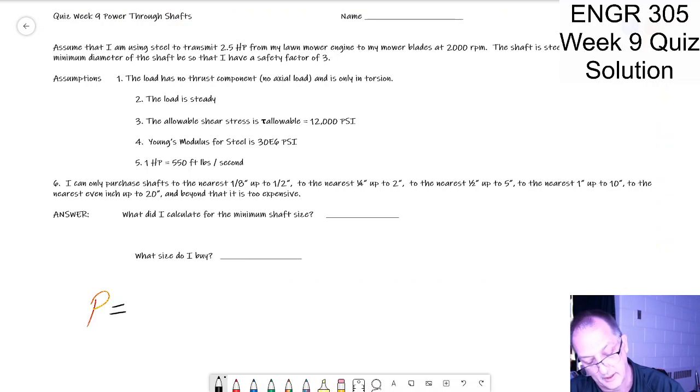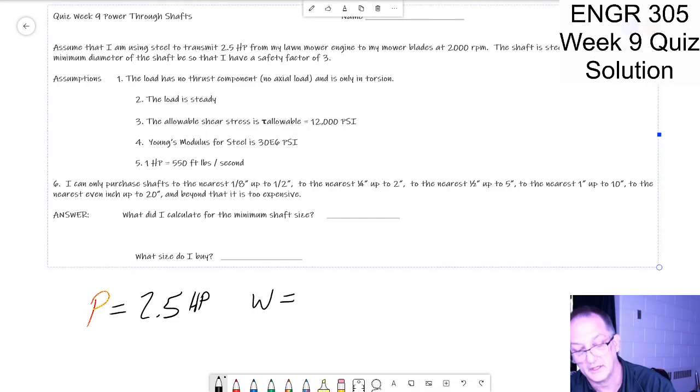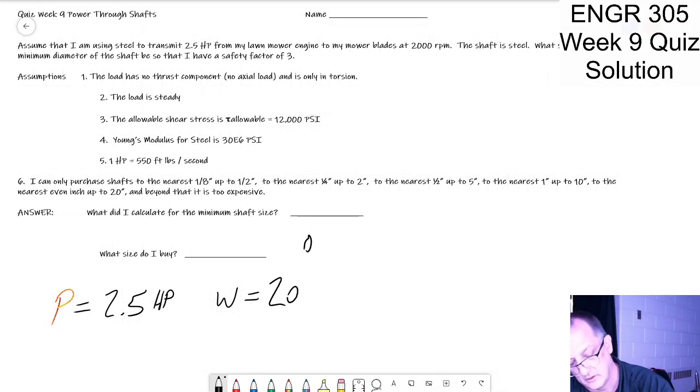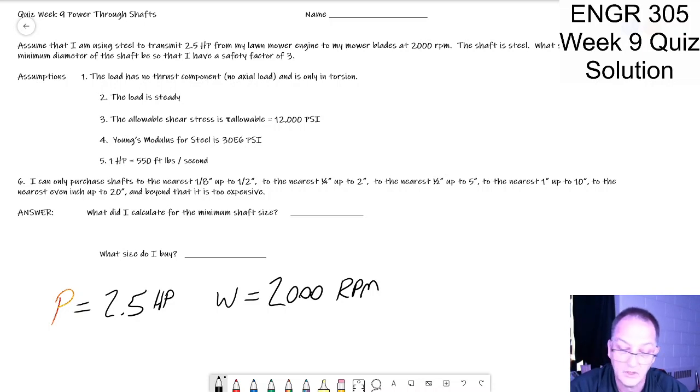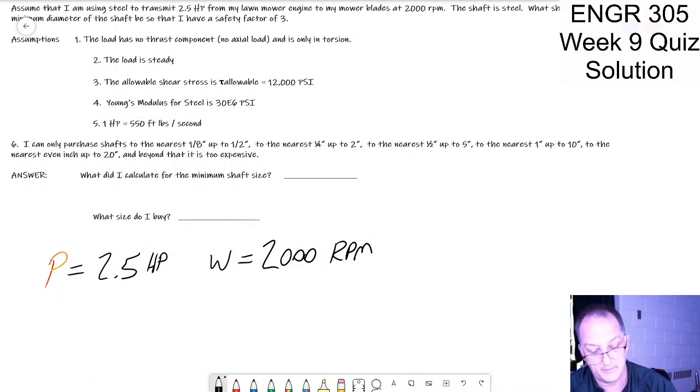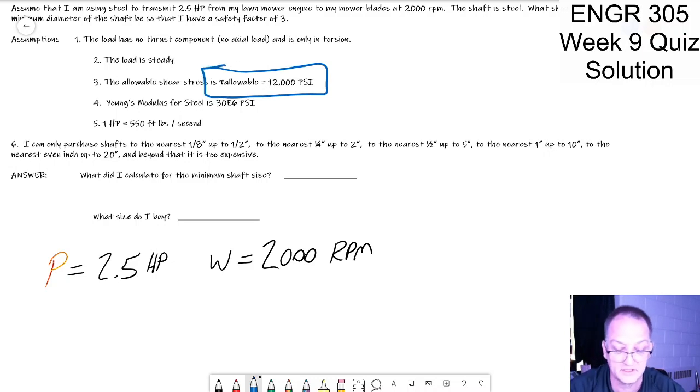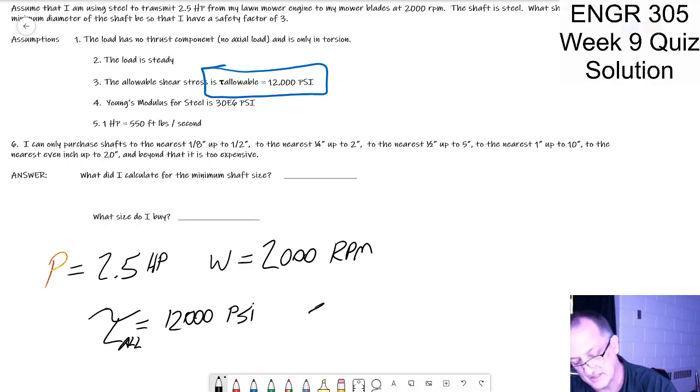Power is equal to 2.5 horsepower and I've got my speed is equal to 2,000 rpm. Now the shaft is steel, what should the minimum diameter of the shaft be so that I have a factor of safety of three? And then I've got some material properties. My allowable shear stress is 12,000 psi.